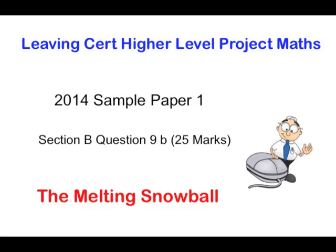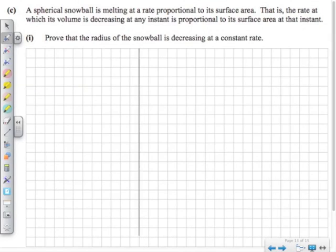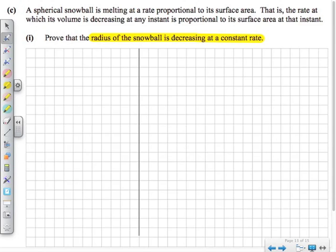This is the melting snowball question, a differentiation question. A spherical snowball is melting at a rate proportional to its surface area — that is, the rate at which the volume is decreasing at any instant is proportional to its surface area at that instant. We want to prove the radius of the snowball is decreasing at a constant rate.